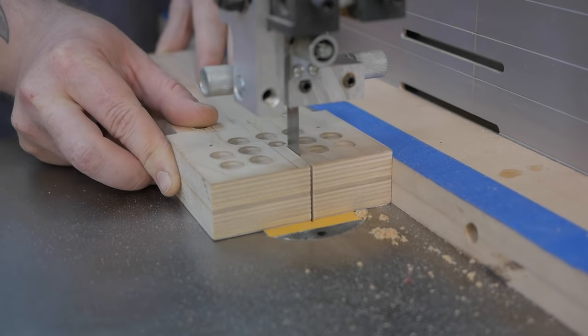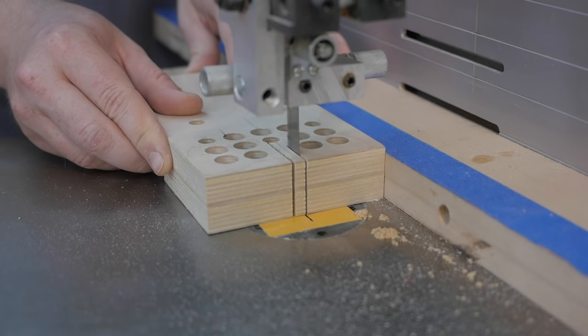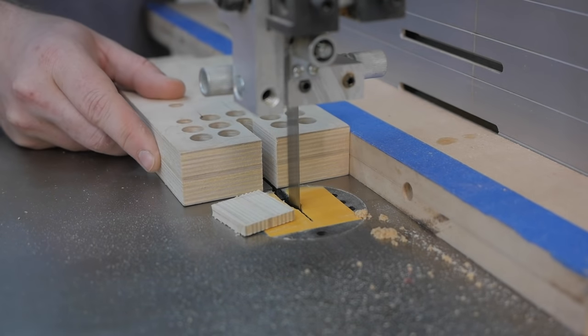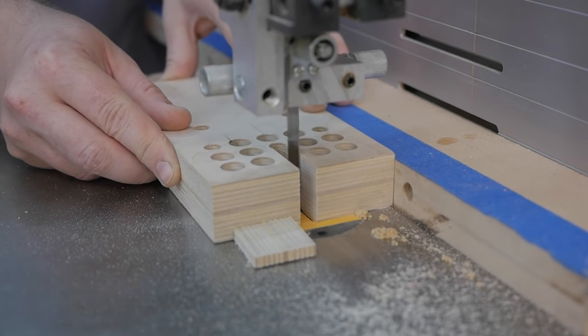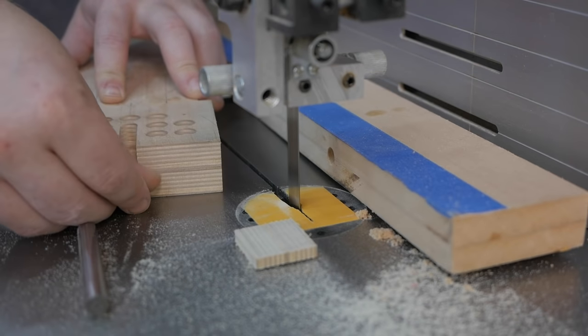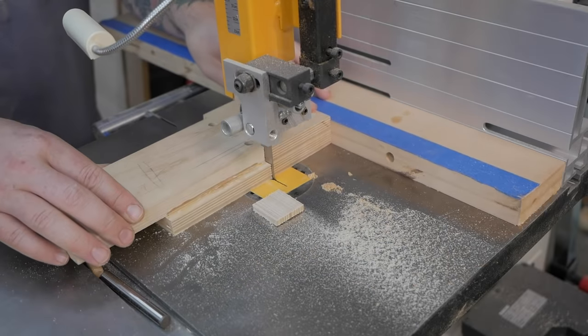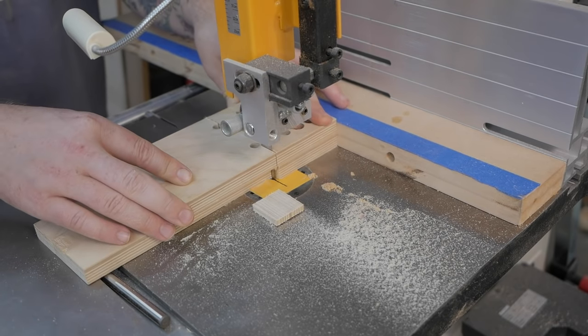At the bandsaw, I snuck up on the alignment slot, flipping the workpiece to keep it centered until a 3/8 inch dowel just fit without slop and without being too tight. Then, I could remove the waste from the sides and reveal the handle.